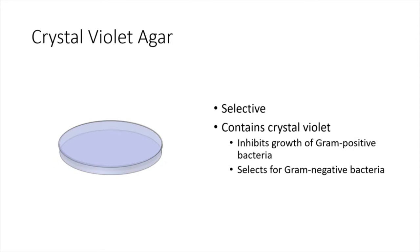The next type of media is called crystal violet agar. You may recognize crystal violet as a dye used in staining, but it's also useful in selective media because crystal violet inhibits the growth of gram-positive bacteria and selects for gram-negative bacteria. So in this way it is the opposite of the phenyl ethyl alcohol agar plate. We will again be plating E. coli, S. aureus, and E. faecalis on this media as well.